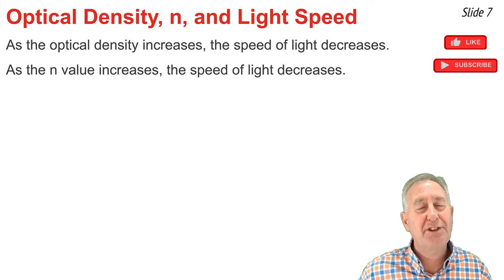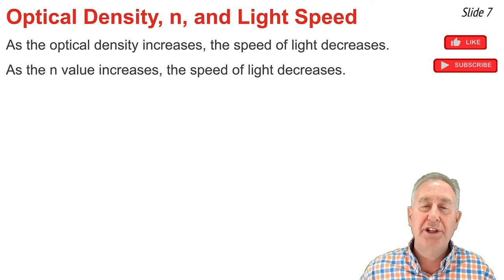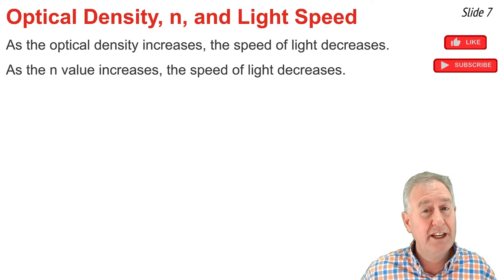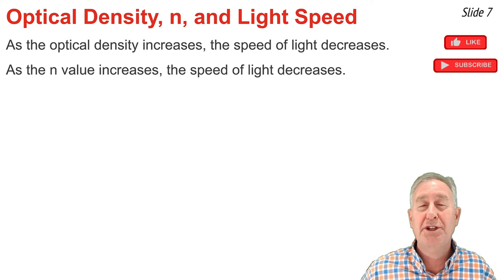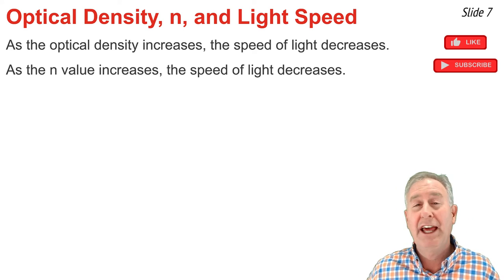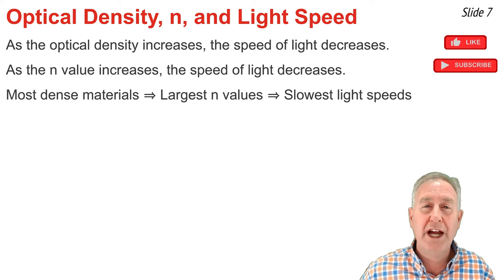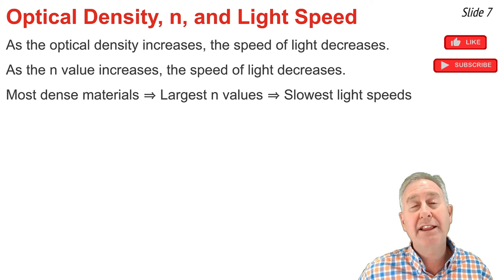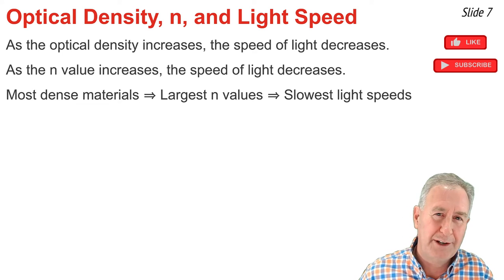Here is a summary of the relationships between optical density, index of refraction, and the speed of light. Optical density and the speed of light are inversely related, and the index of refraction and the speed of light are also inversely related. Thus, materials that are most optically dense have the largest index of refraction value, and light travels slowest through those materials.